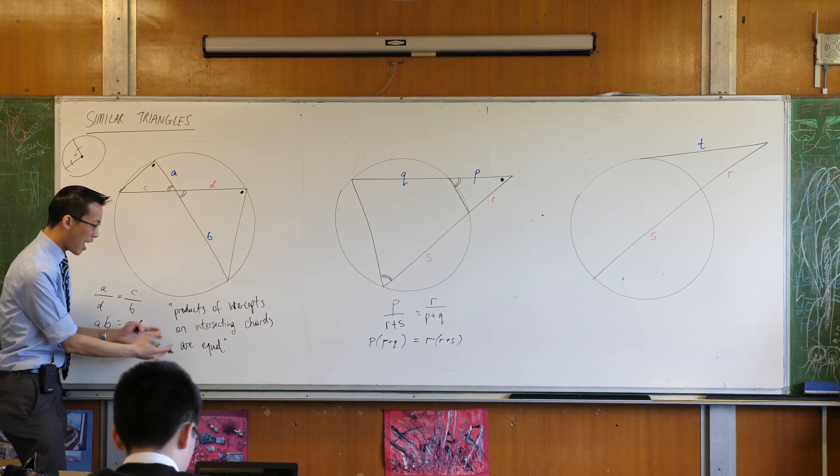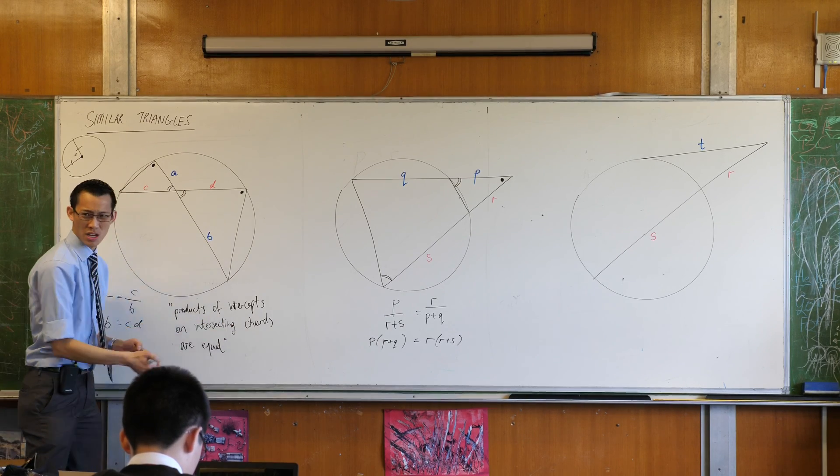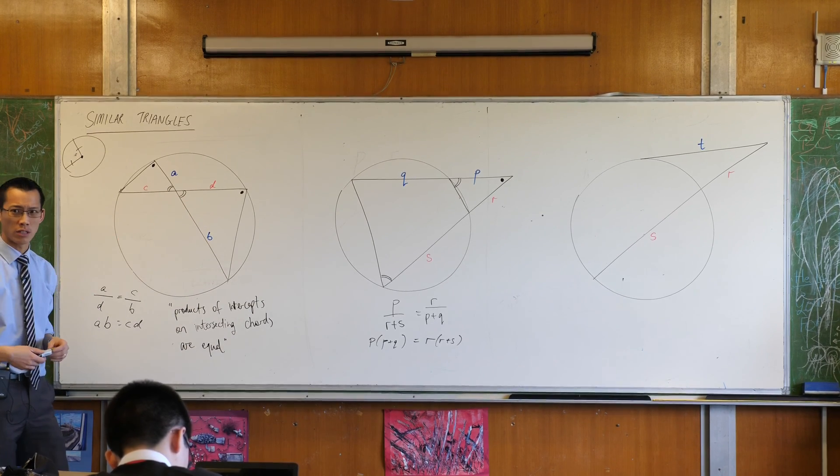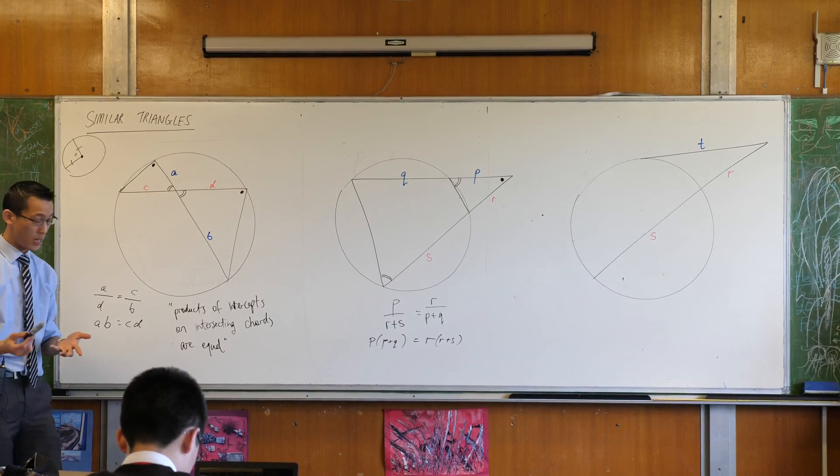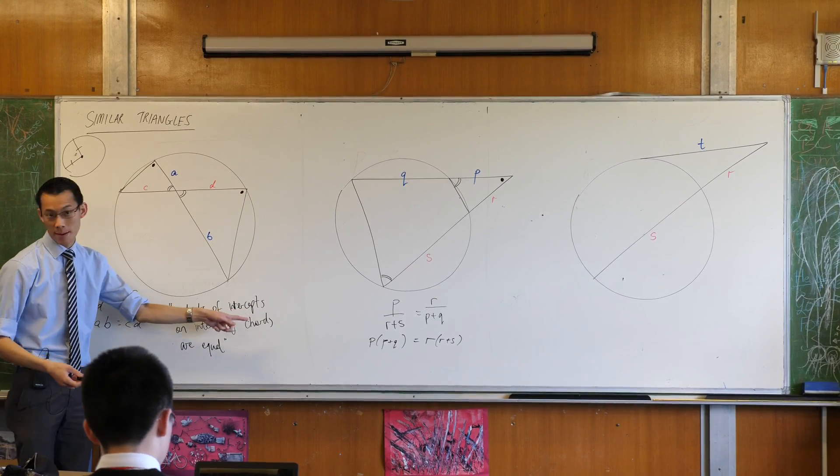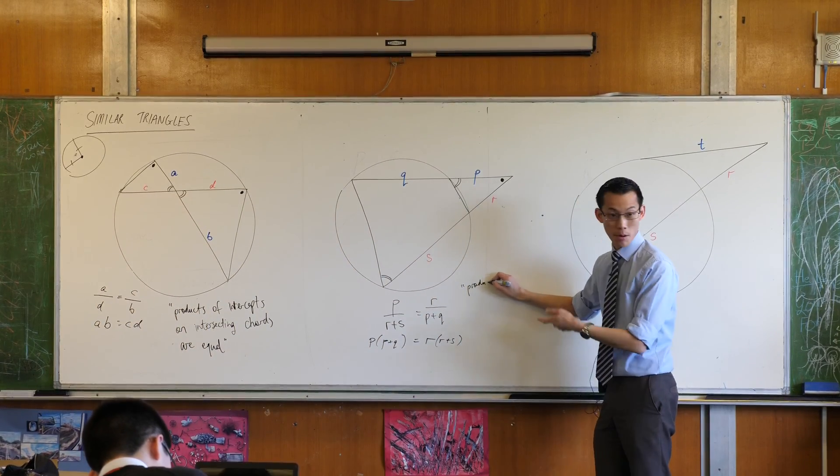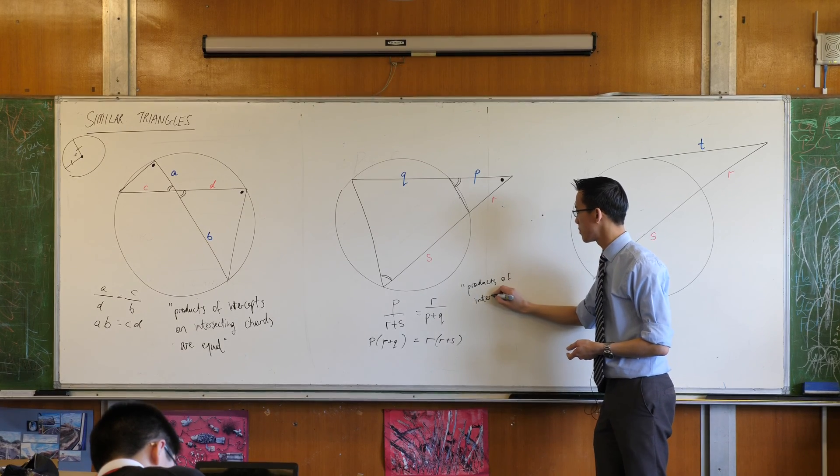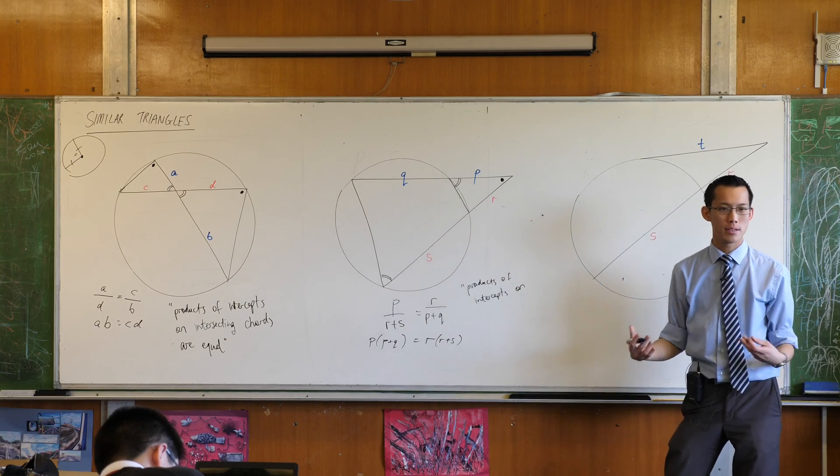So in fact, the wording for this is identical for this, except we're not talking about intercepting chords, are we? What are these things, these shapes that we're looking at? They're not chords at all. I guess the way we'd say it is, products of intercepts, that's the way you'd start it off, let's do that, because we're still talking about intercepts that are multiplied together. So products, products of intercepts, on.